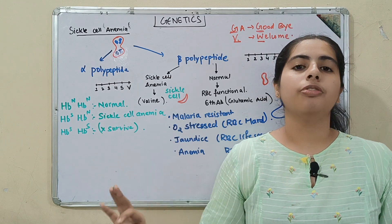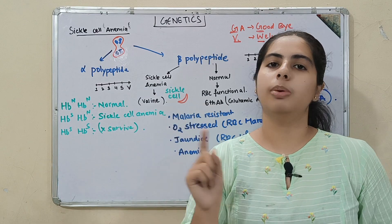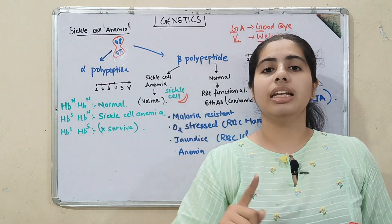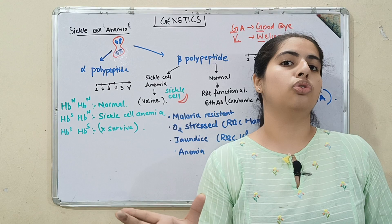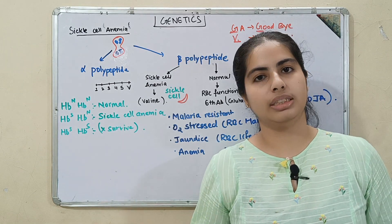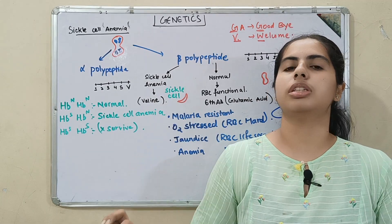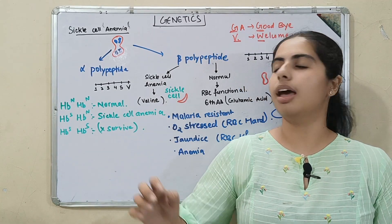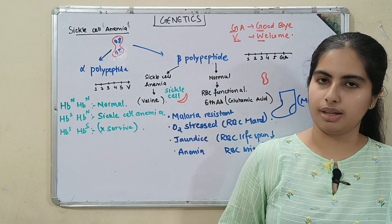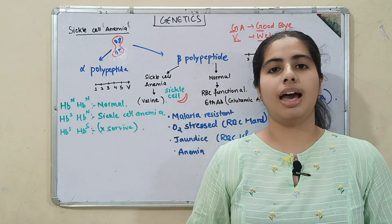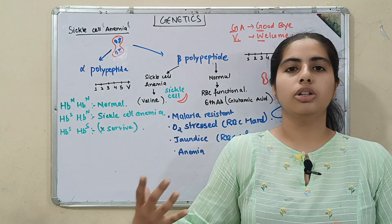Recap: sickle cell anemia means the 6th amino acid of beta polypeptide chain changes — glutamic acid says goodbye and valine is welcomed. This causes the RBC shape to become sickle-shaped. Symptoms: MOJA. Normal hemoglobin is NN; sickle cell anemia is SN (heterozygous, survives) or SS (homozygous, dies at birth). We have completed sickle cell anemia.